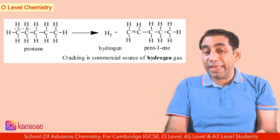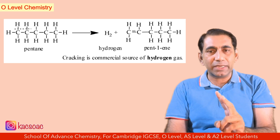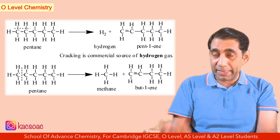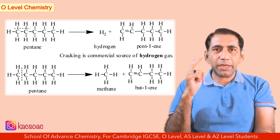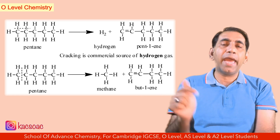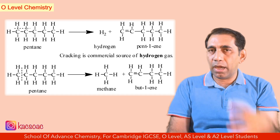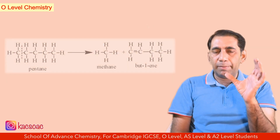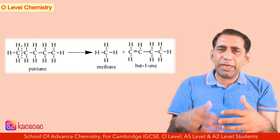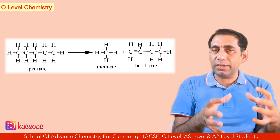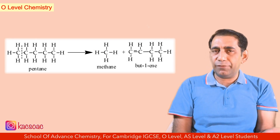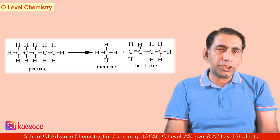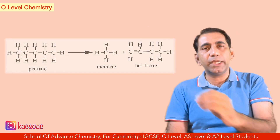If we crack pentane into two parts at another position, one part may be an alkane and the other an alkene. For example, if we break between carbon one and carbon two, the one-carbon fragment becomes methane and the remaining four-carbon fragment becomes butene. So methane and butene are formed.